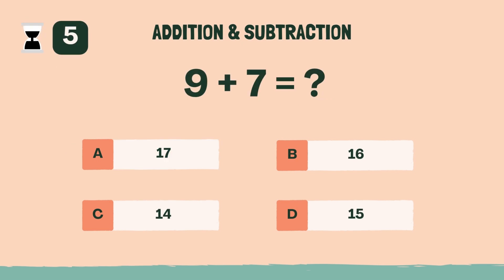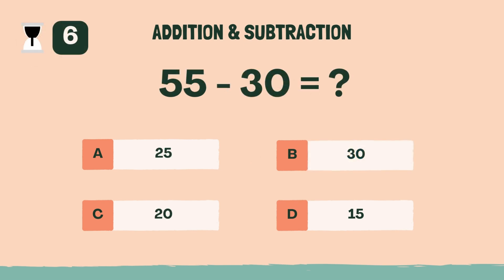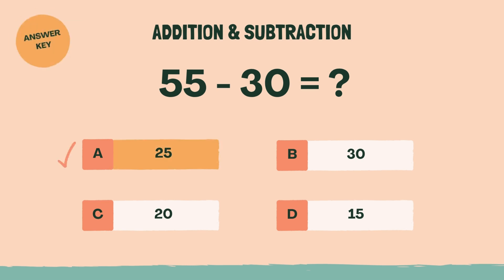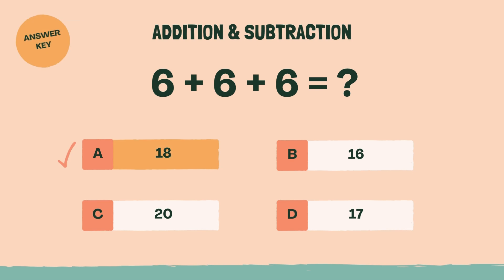What is 9 plus 7? B, 16. What is 55 minus 30? A, 25. What is 6 plus 6 plus 6? A, 18.